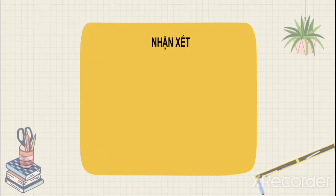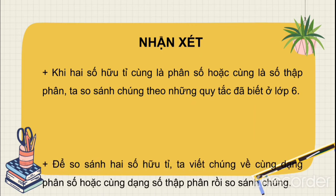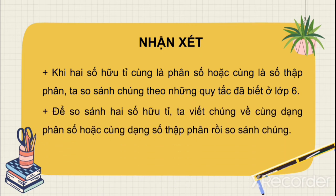Tương tự câu A và câu B, các bạn sẽ tự so sánh. Khi so sánh 2 số hữu tỉ cùng là phân số hoặc cùng là số thập phân, ta so sánh chúng theo những quy tắc đã biết ở lớp 6. Để so sánh 2 số hữu tỉ, ta viết chúng về dạng phân số hoặc cùng dạng số thập phân rồi so sánh chúng.